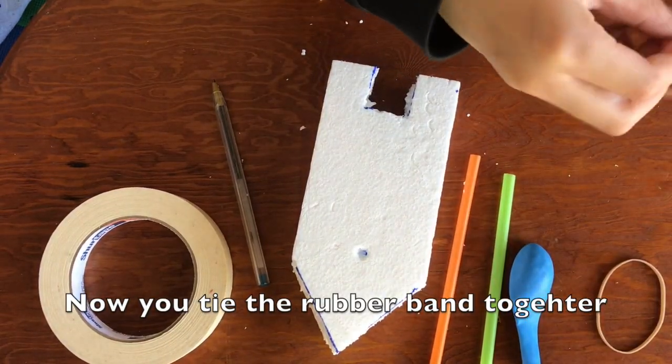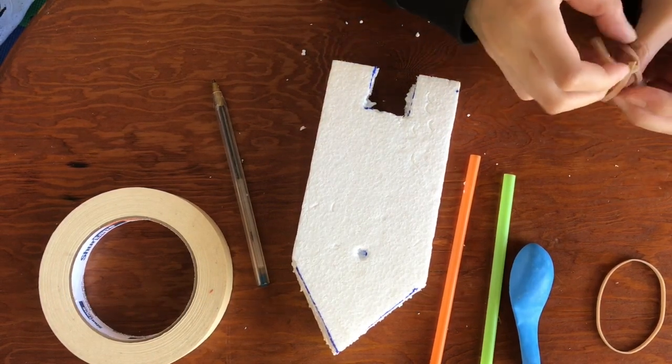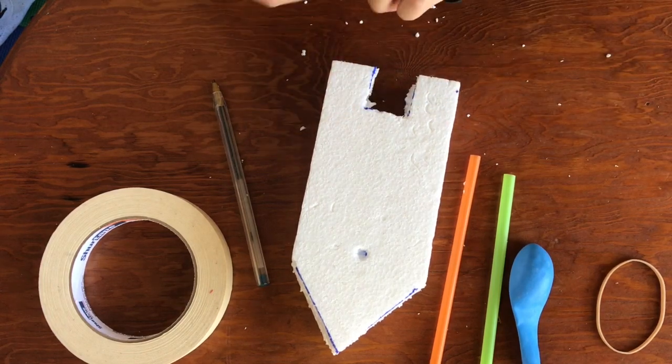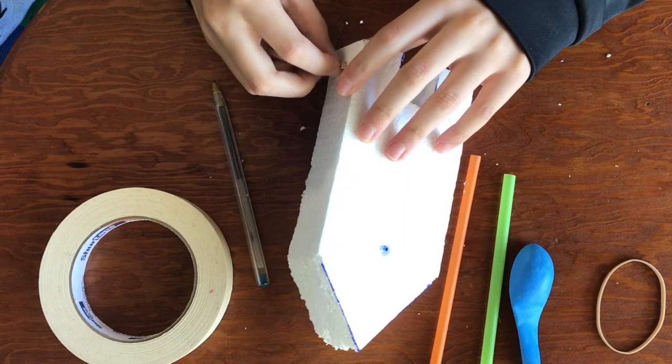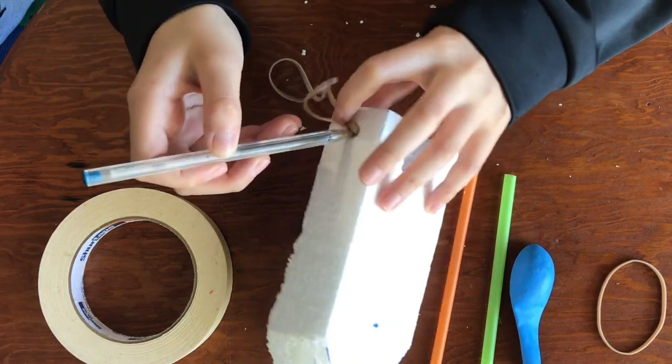Next, you tie the rubber bands together, and then you use a pen to push it through the two holes.